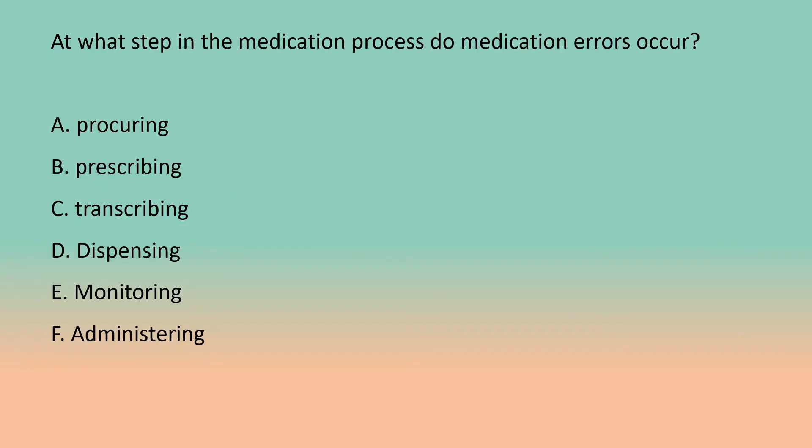At what step in the medication process do medication errors occur? A. Procuring. B. Prescribing. C. Transcribing. D. Dispensing. E. Monitoring. F. Administering. Answer: All of the above — A. Procuring. B. Prescribing. C. Transcribing. D. Dispensing. E. Monitoring. F. Administering.